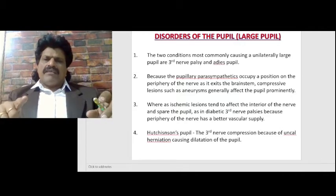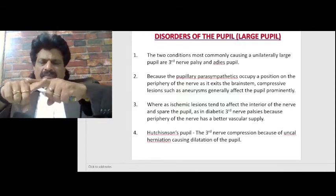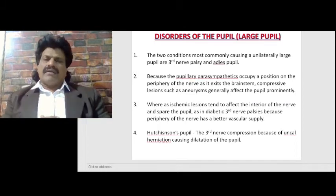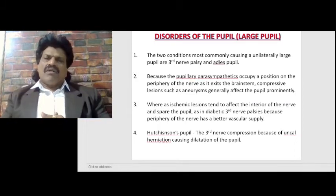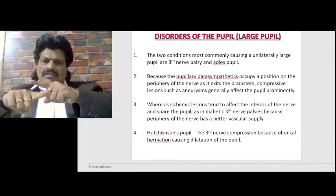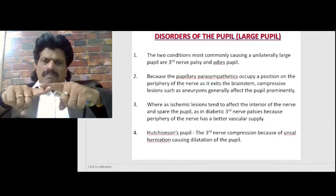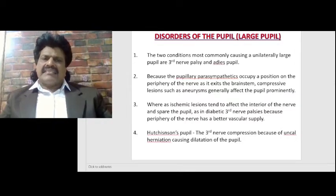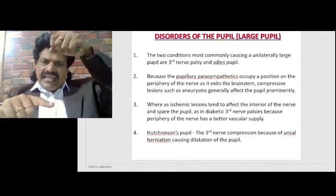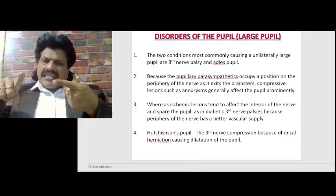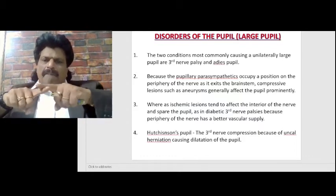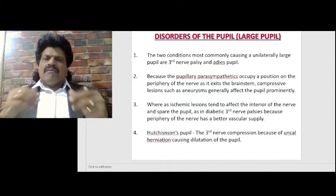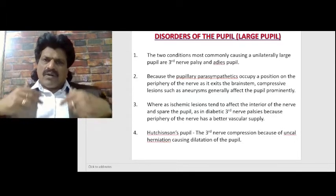The pupillary parasympathetic fibers are superficially spared in diabetic third nerve palsy — that is why it is sometimes called pupillary-sparing third nerve palsy. Ischemic lesions tend to affect the interior of the nerve and spare the pupil, as in diabetic third nerve palsy, because the periphery of the nerve has a better vascular supply.